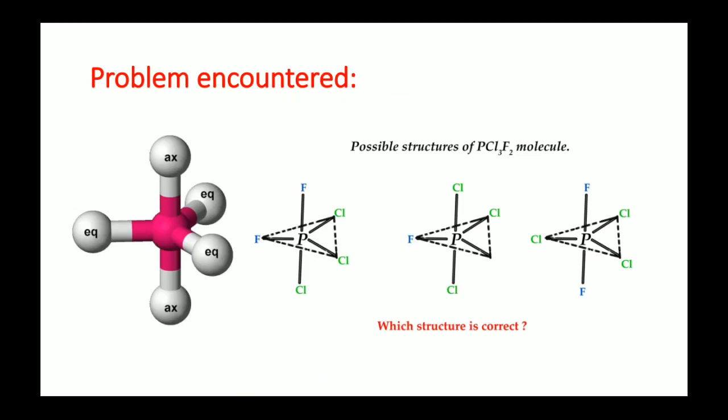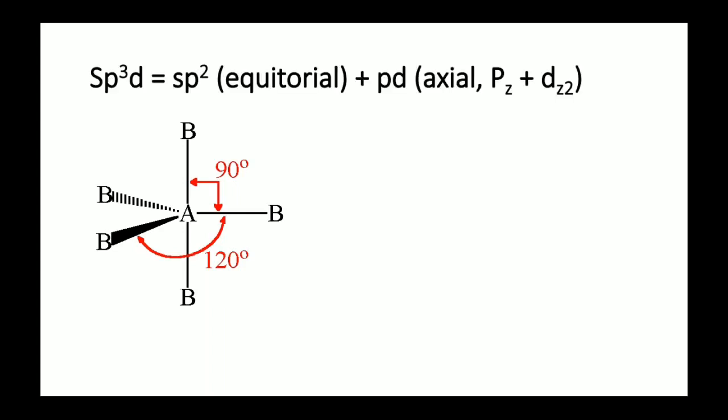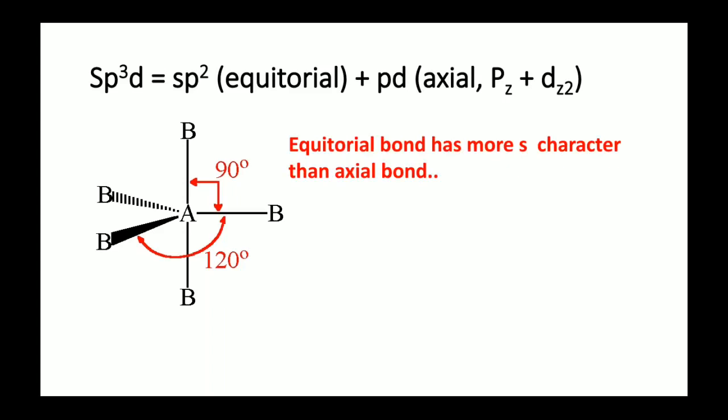There are three possibilities: in the first, one fluorine is axial and one is equatorial; in the second, both fluorines are in the equatorial plane; in the third, both fluorines are in the axial plane. The bond angle between axial and equatorial bonds is 90°, and between equatorial bonds it is 120°. In sp³d hybridization, the equatorial plane consists of sp² hybridization, and the axial bonds consist of pd hybridization (where p is pz and d is dz²).